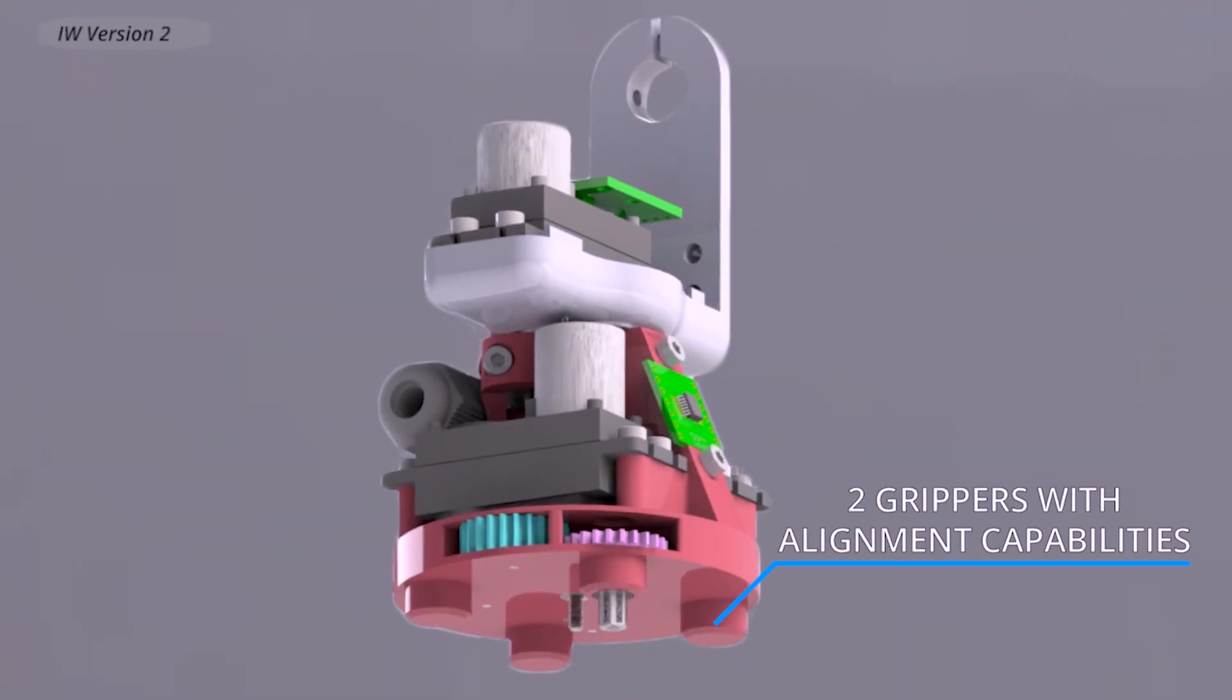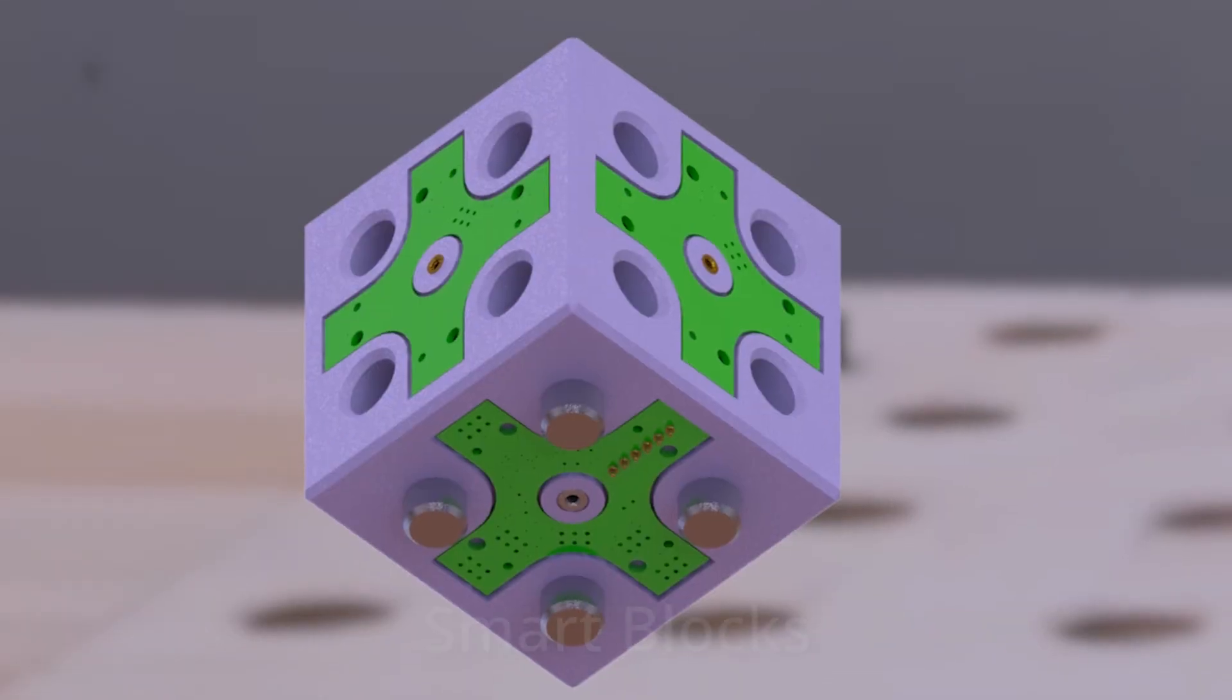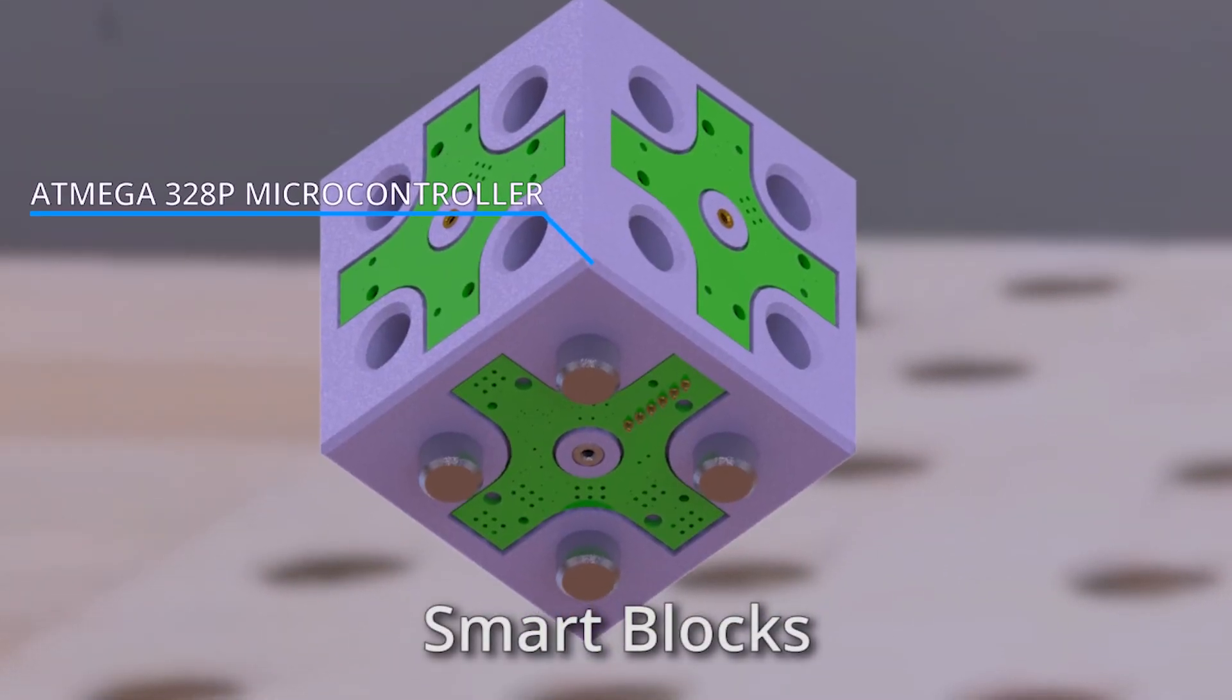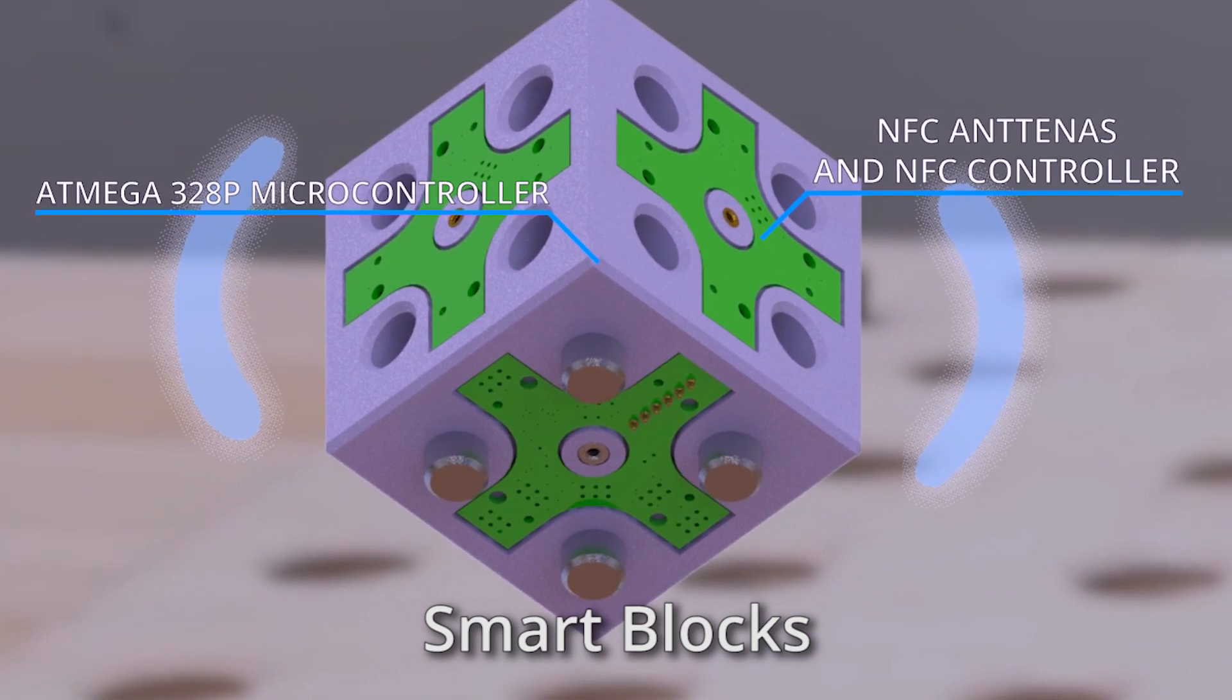These robots have special grippers that allow them to move around our second type of robot, our smart blocks. These smart blocks are able to communicate with one another through NFC and can convey information such as their position and status.